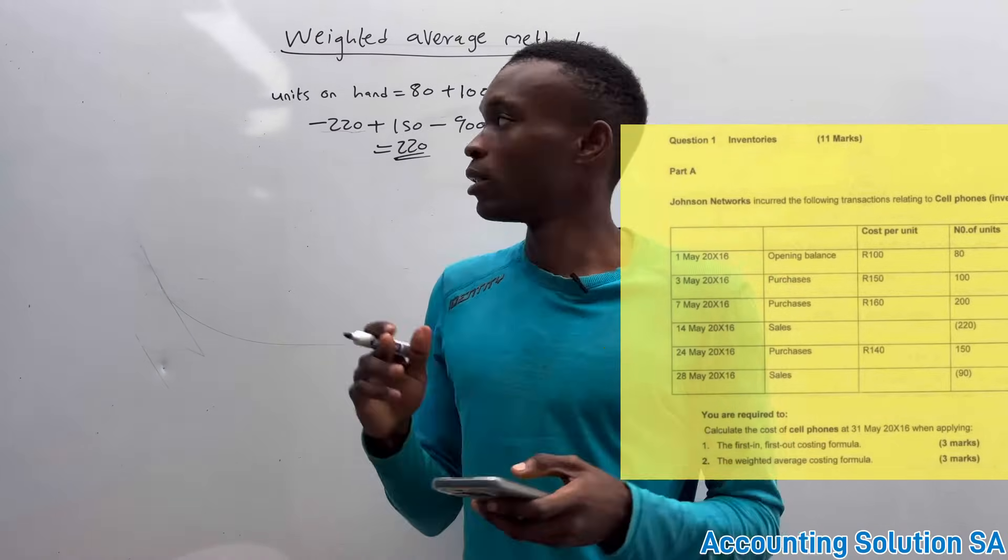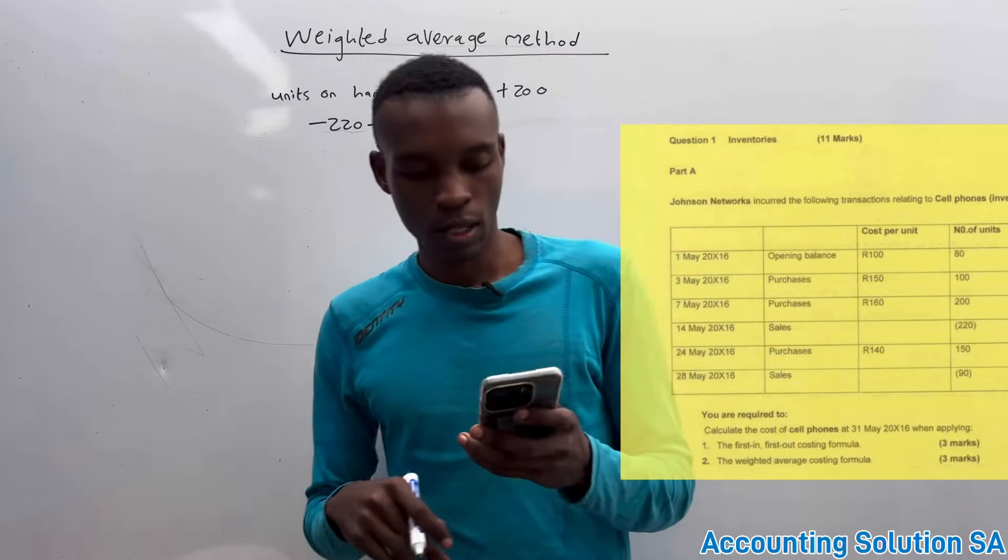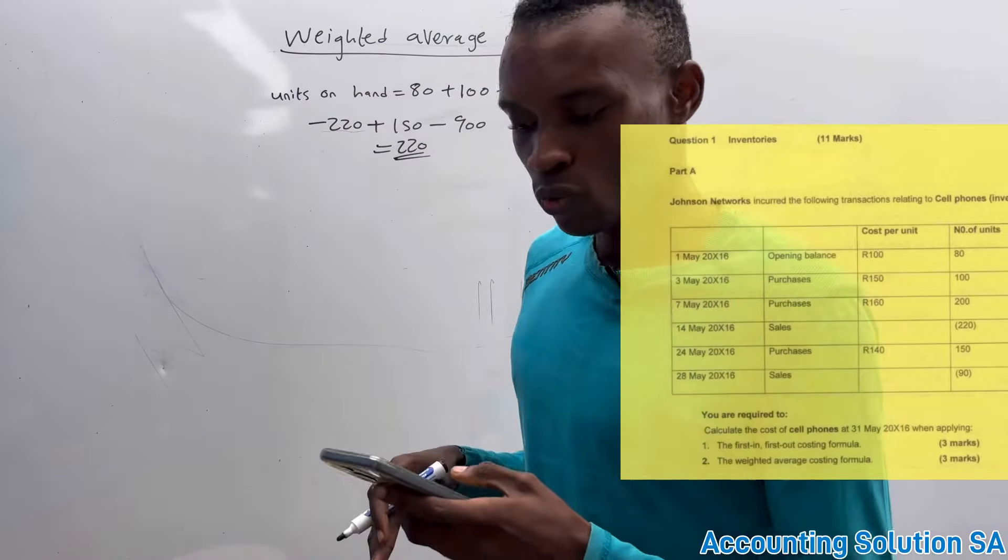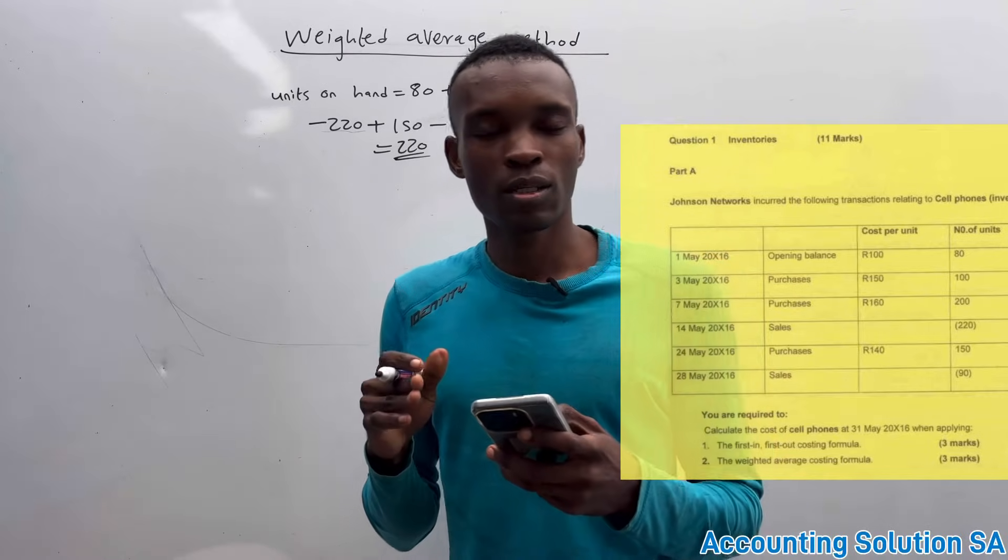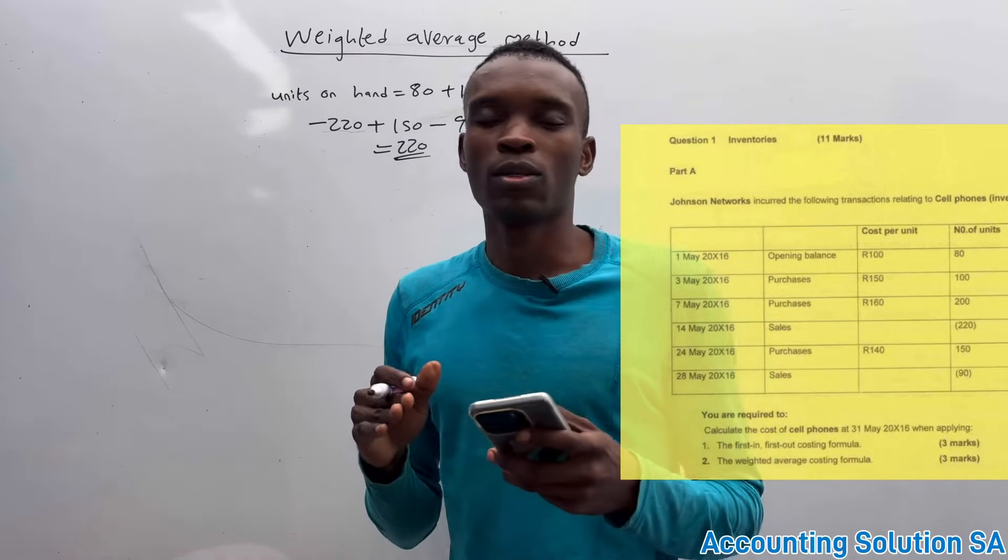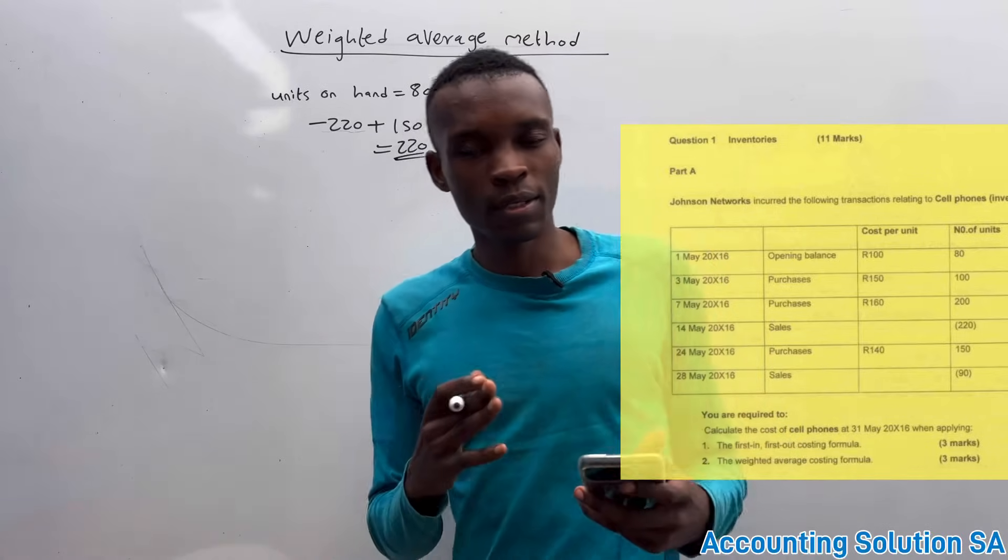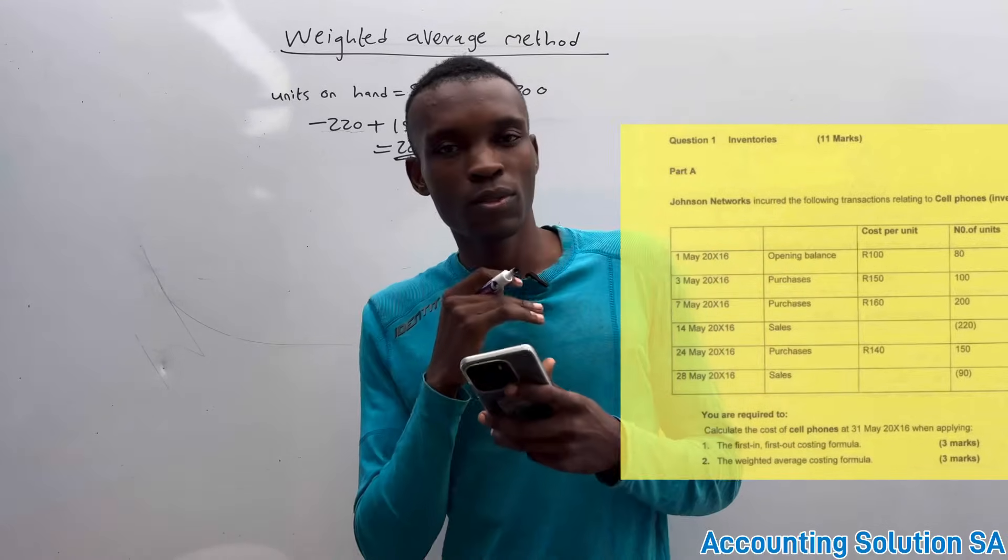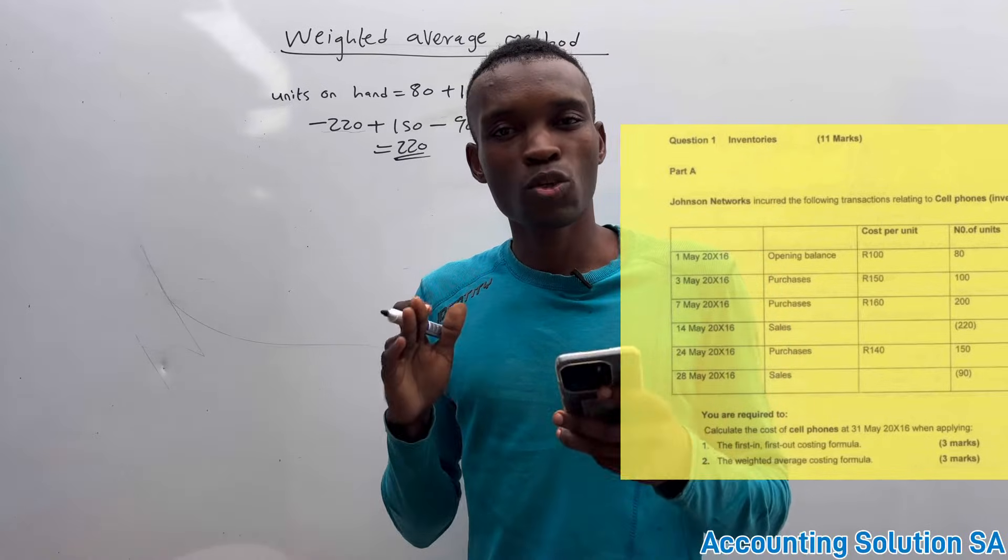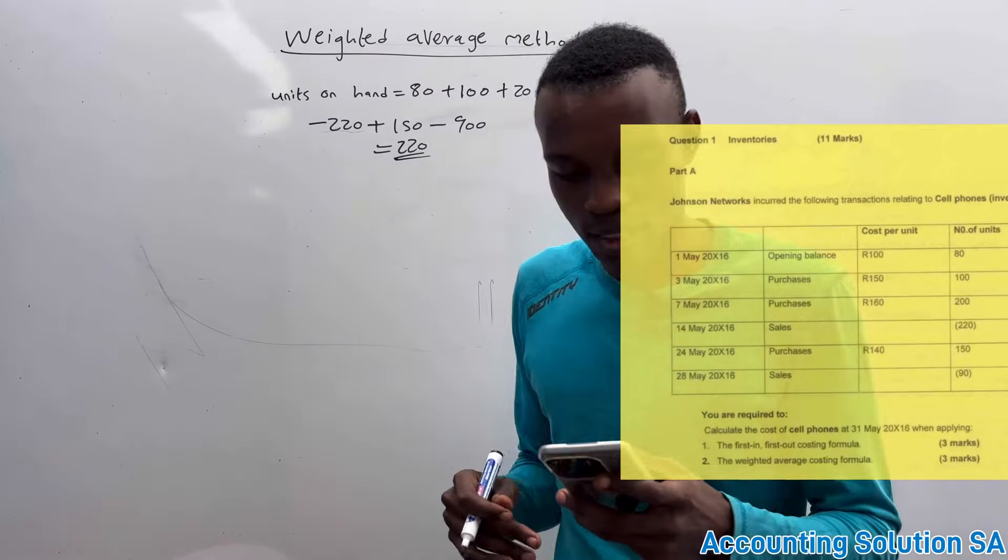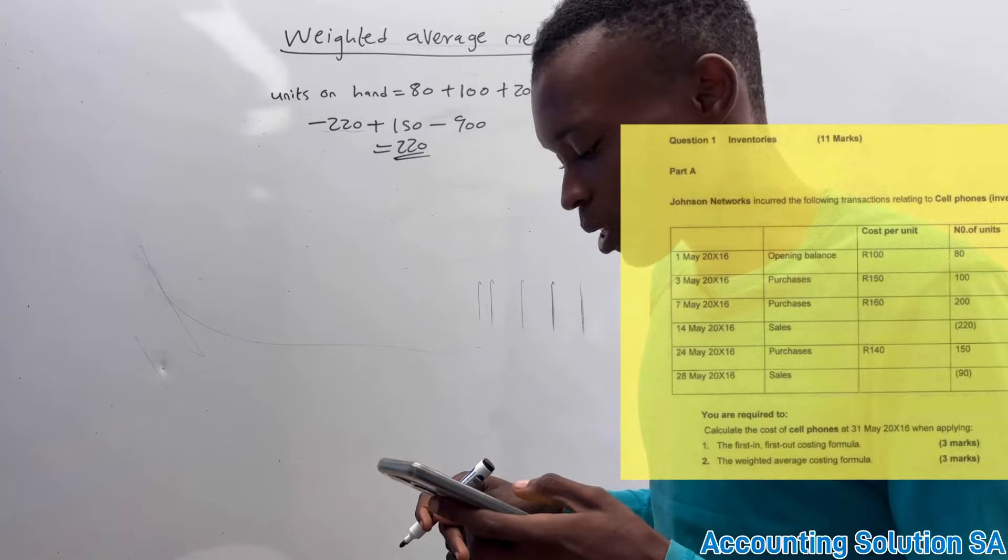Then after that, we can do the average so that we can get average price, then we multiply by 220. How are we going to do average? When you do average, make sure that you add opening balance and you add all purchases. If you have any return, you need to subtract. In this case, sales is not included when you do average.